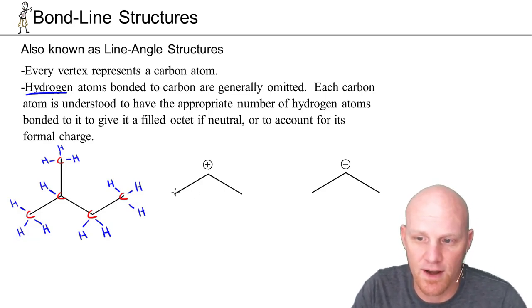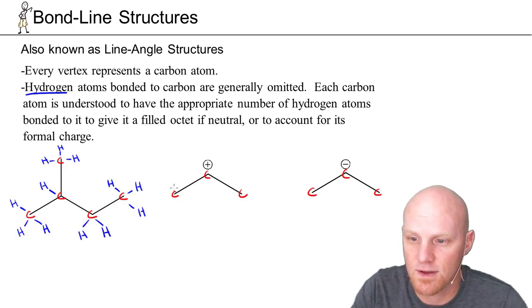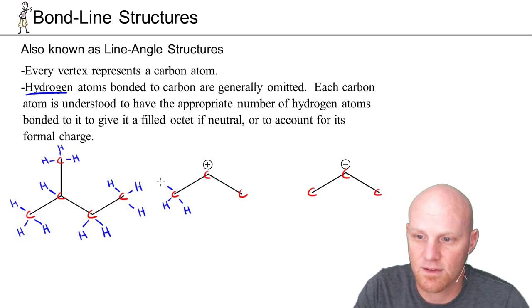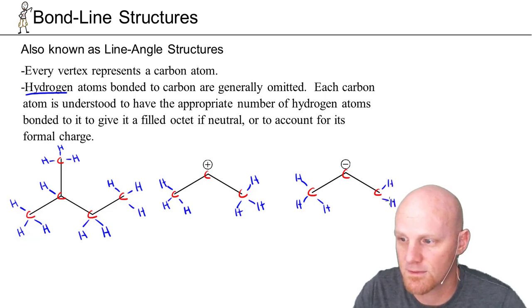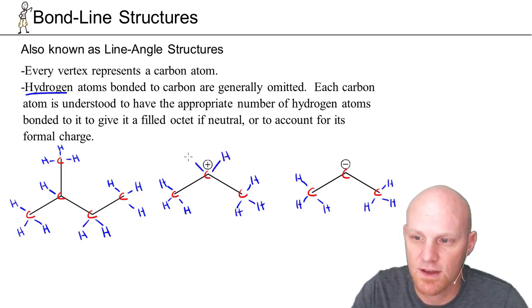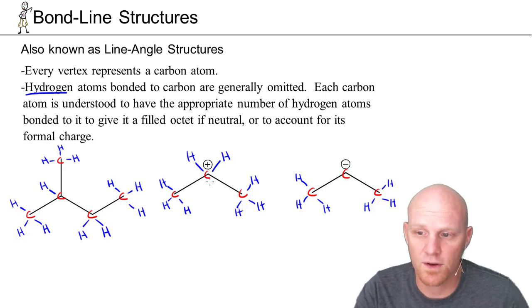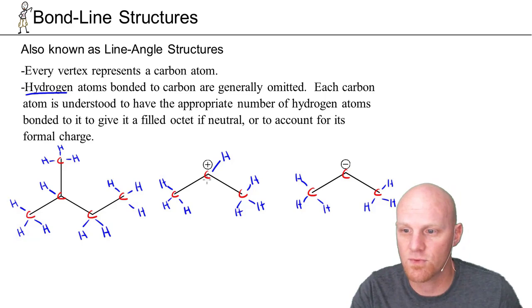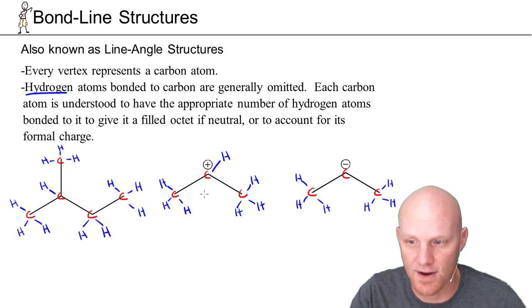Take a look at what happens when we have a formal charge. Every vertex is a carbon in both of these structures. Each of these carbons on the ends has three hydrogens to get a filled octet. The question is, what about this one? If we give it two hydrogens, it will have a filled octet, but it wouldn't have a positive formal charge — we'd calculate four minus one, two, three, four, giving no formal charge. So we have to take off one of those hydrogens; it only gets one, and now four minus one, two, three gives a positive formal charge. This is called a carbocation — a carbon with a positive charge that typically has only three bonds rather than four.